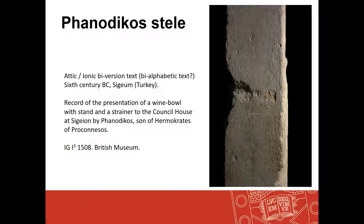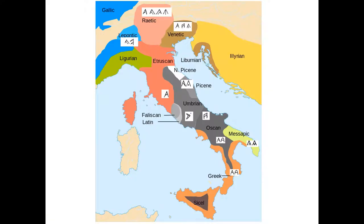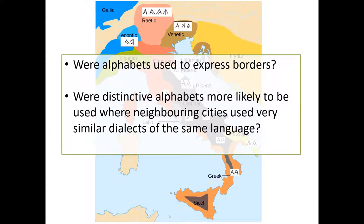For the rest of this paper, what I'm interested in exploring is how well this model that Luraghi argues for — so convincingly, I think, for Greece — transfers to the alphabets of Italy. Does it help us explain anything about what is going on? Were alphabets used to express the borders between political units such as city-states, and were distinctive alphabets more likely to be used where neighbouring cities were using very similar dialects of the same language?